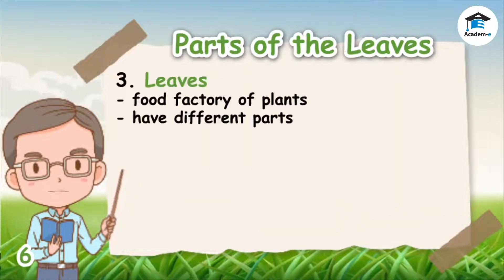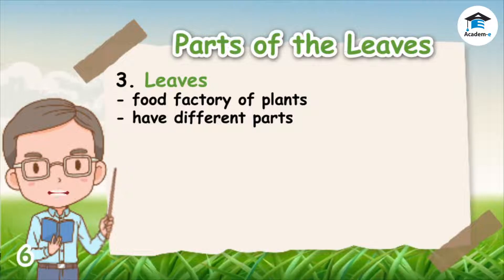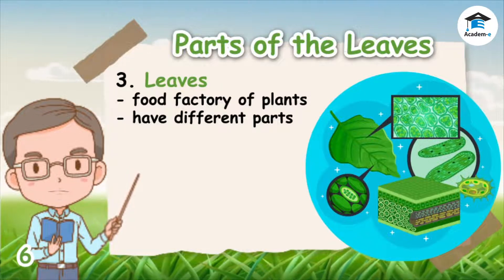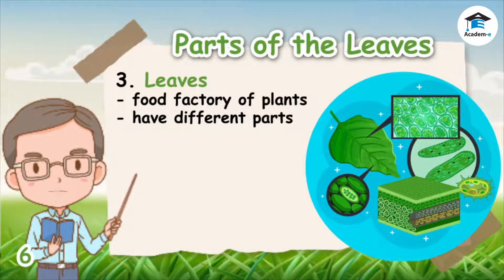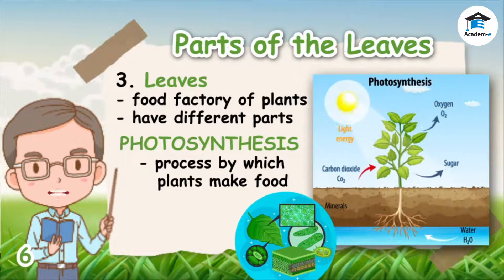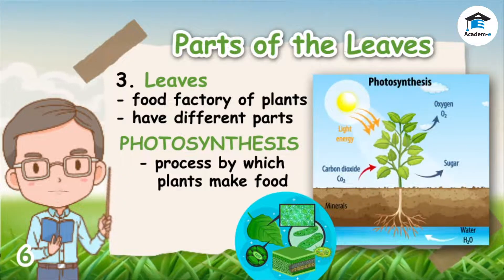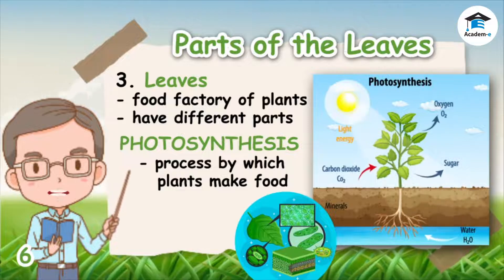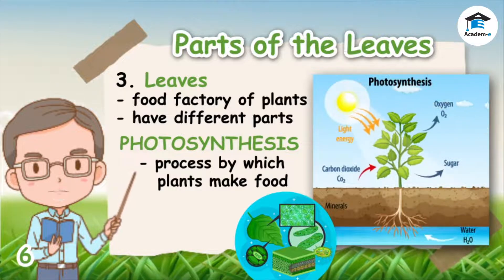Unlike animals, plants can produce their own food. The part of the plant that produces food is called a leaf. Leaves are considered to be the food factory of plants. The process by which plants make food is called photosynthesis. During photosynthesis, the chlorophyll in plant leaves traps energy from the sun and converts carbon dioxide and water into oxygen and sugar.